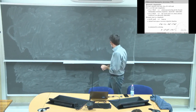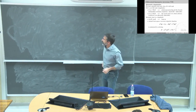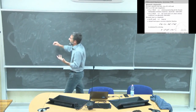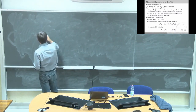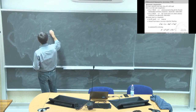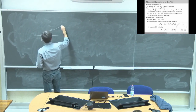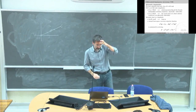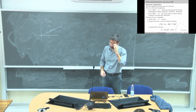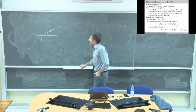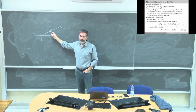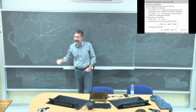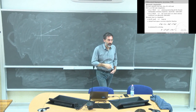Let us start by considering the possibility of facing a kinematic singularity with an R2 link robot. We saw that in this configuration, when Q2 is zero or pi, we are facing a kinematic singularity.